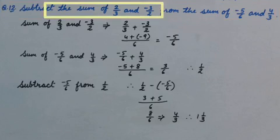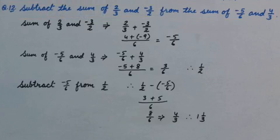Parts are given. First of all we will solve one part. That is the sum of 2 upon 3 and minus 3 upon 2. When we solve it, answer is minus 5 upon 6.